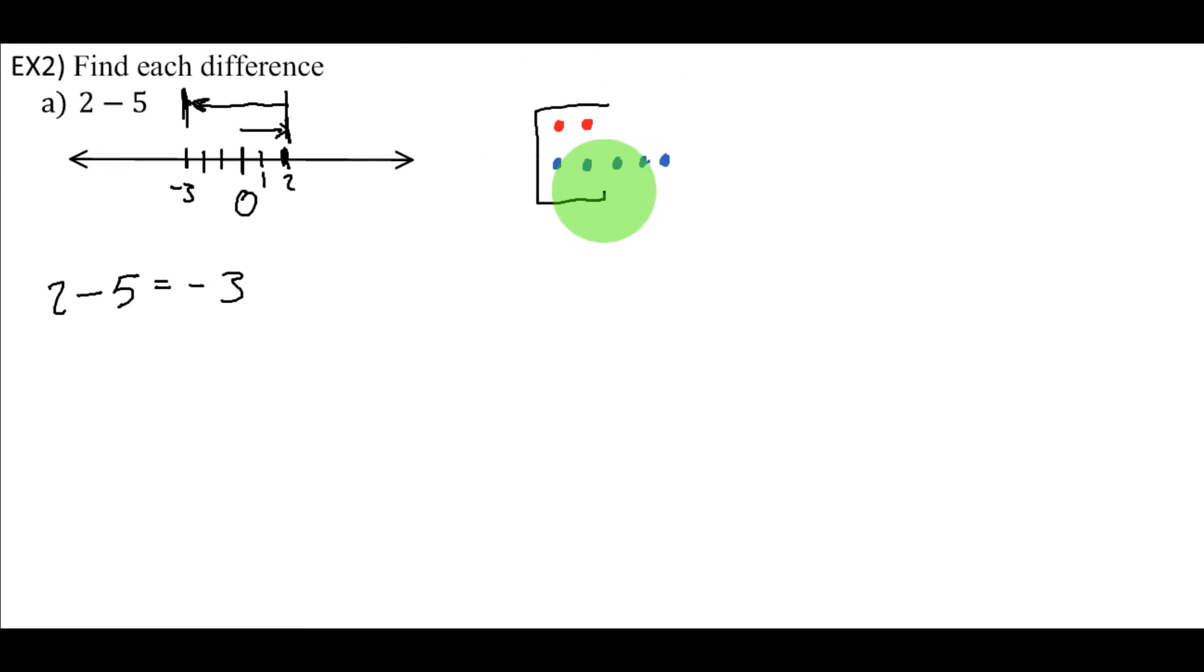I have 2 integer chips that are opposite. They match up, and they'll cancel each other out. I'm left with 3 negative integer chips.